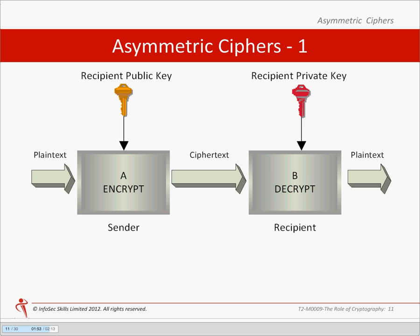In most applications, this technique is used to share a symmetric key. On the opposite process: the sender uses the private key to encrypt a message, and the recipient uses the sender's public key to decrypt the message. Hence anyone with the sender's public key could decrypt the message. What this proves is that only the sender could have generated the message, because they are the only entity in possession of the private key. This mode of operation can therefore provide authentication, which will be covered later when we describe digital signatures.